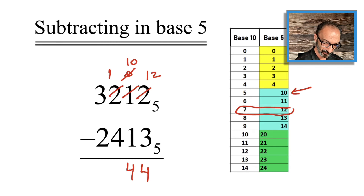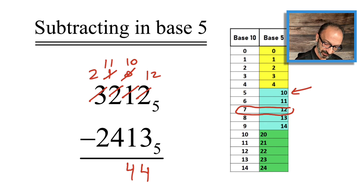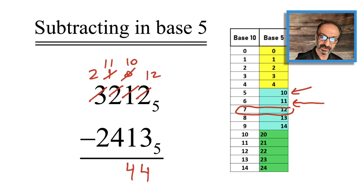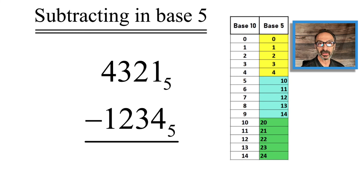Now 1 minus 4, I cannot do, so I go to the 3 to my left and borrow 1 five, making it 2 fives. The 1 becomes 1 1, which is 1 five and 1 unit — like 6. So 6 minus 4 is 2. The last digit is 2 minus 2, which is 0. So the answer is 2 4 4 in base 5.